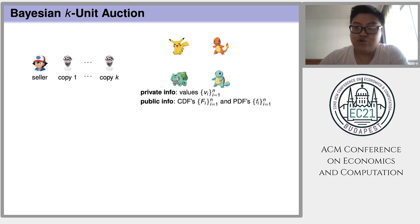Instead, the value distribution from which those privately known values are drawn are public information. That is, these distributions are known to all of the potential buyers as well as the seller himself.